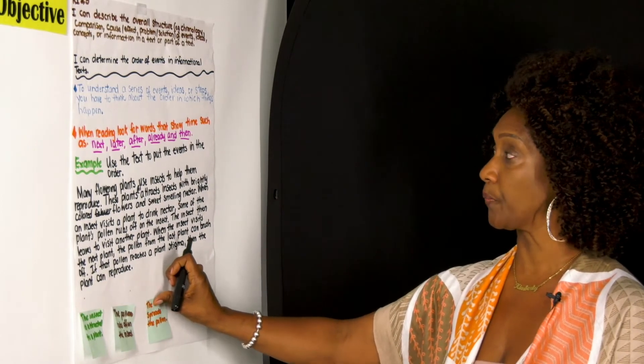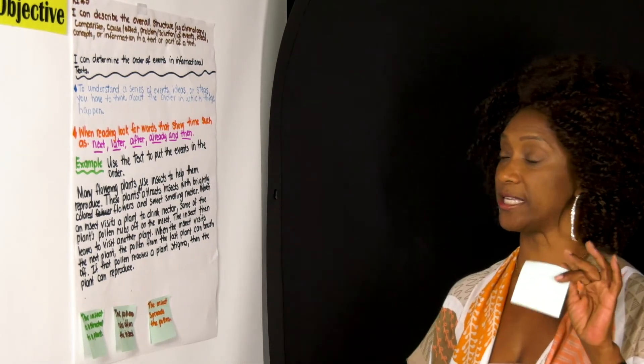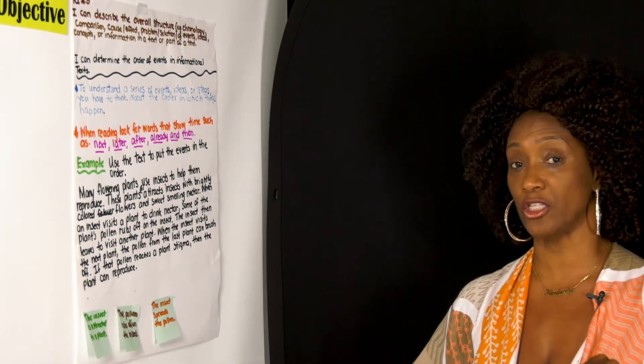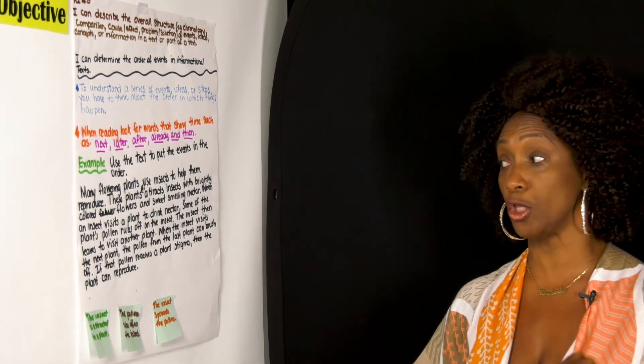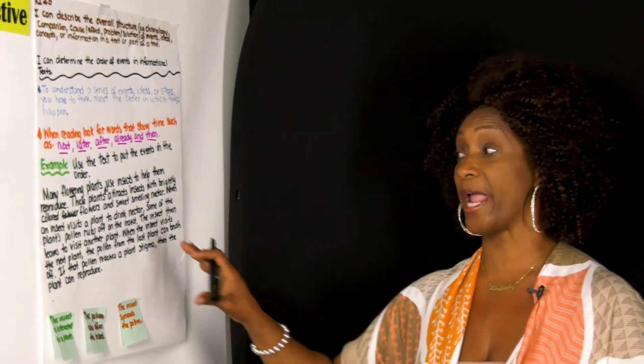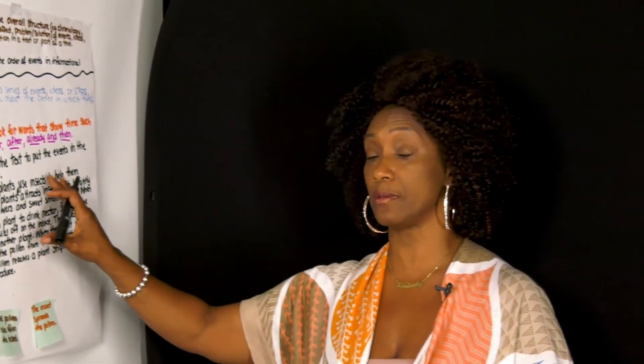Boys and girls, what we just did there, looking at our text structure — sequential — we arranged the events that took place in this topic in order: the insects were attracted to the plant, the pollen rubs off the insect, and the insect spreads the pollen.